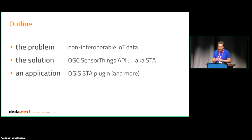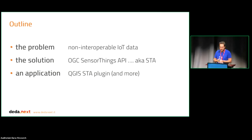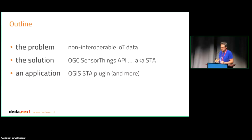We realized that we didn't have access — that the data available was not interoperable from region to region. So we found a solution with an open standard for sensor data, which is the OGC SensorThings API standard, which I will present later on. And then, having found the solution, we developed an application for this standard.